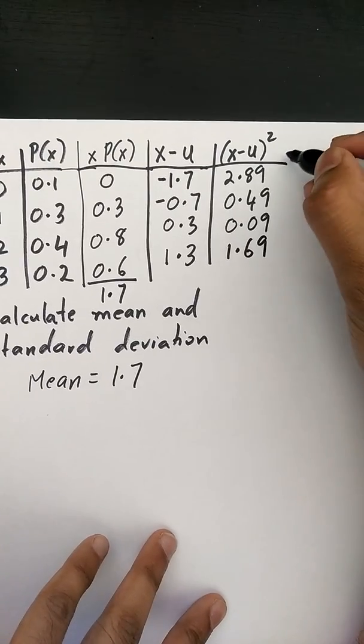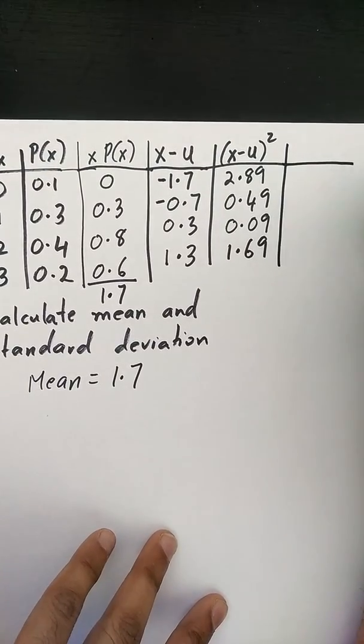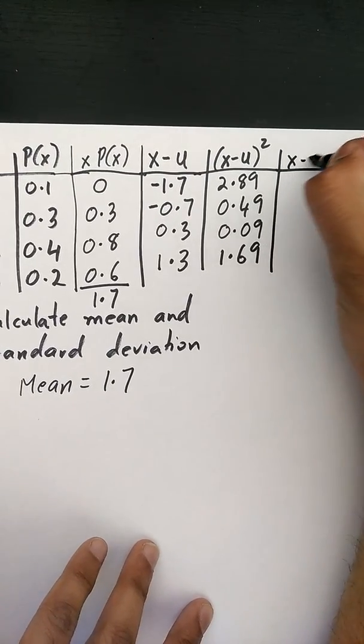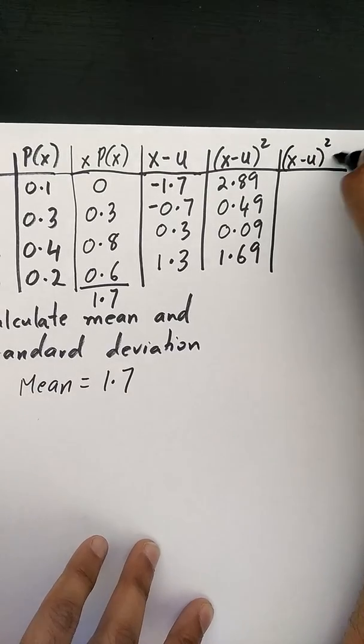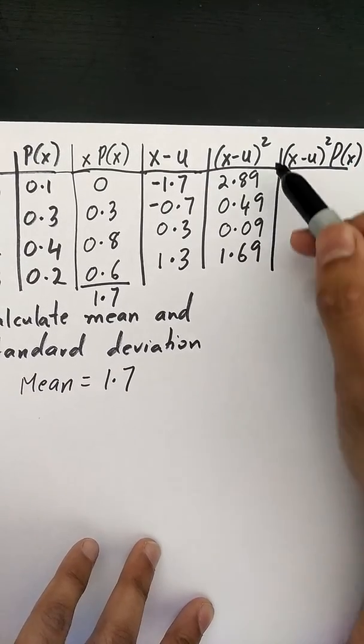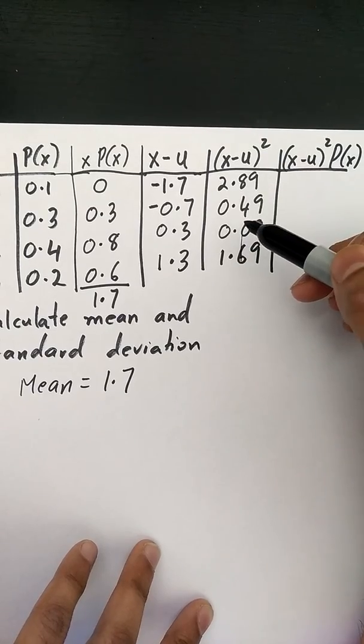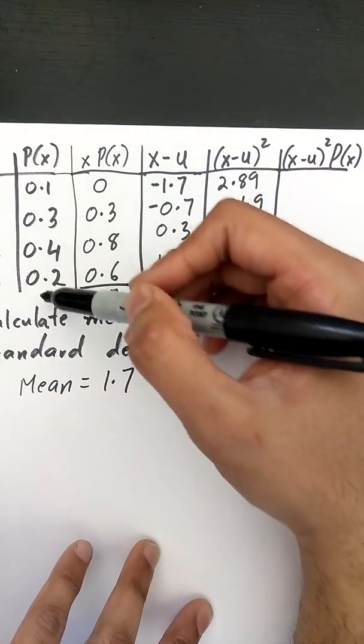And then we're going to create a final column here that is called x minus mean squared times p of x. So basically we are multiplying this column over here with our probability column right here.